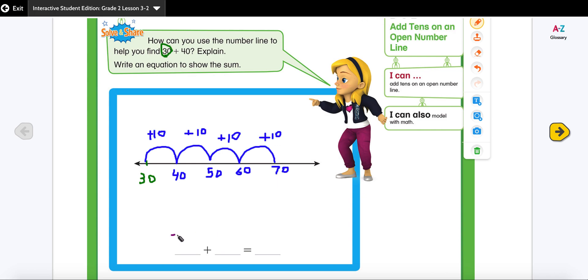So I had my addend 30 and I added 40. This was my equation and what's my sum? My sum is the last point where I landed which is 70. So this is my equation. That's the answer to my sum.